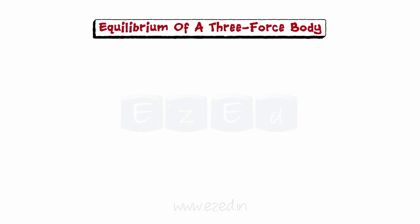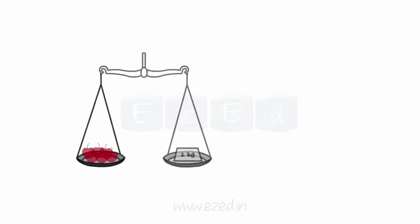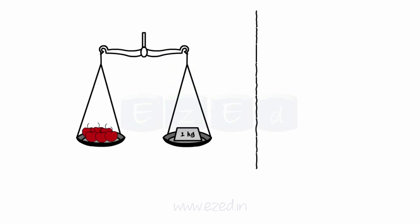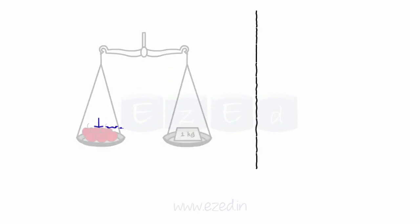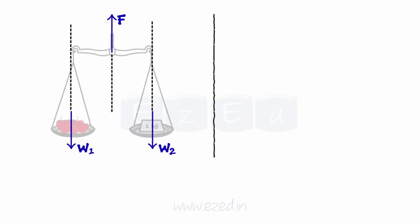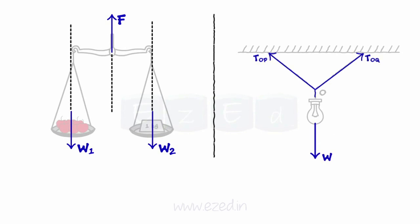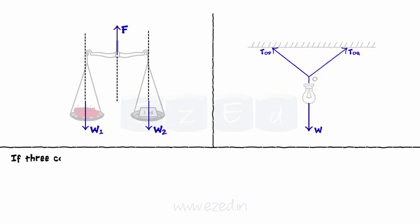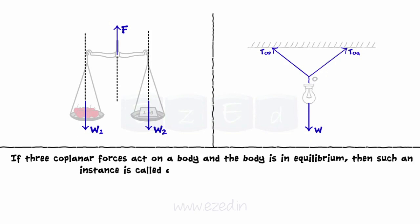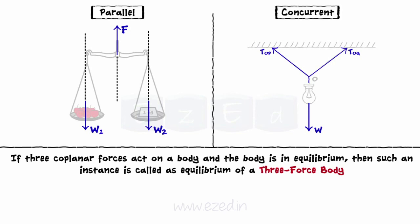Now we will learn about equilibrium of a three-force body. Consider a fruit vendor holding a weighing scale weighing apples. The forces acting in this system are the weight forces and the force applied by the vendor to hold the scale. If three coplanar forces act on a body and the body is in equilibrium, then such an instance is called equilibrium of a three-force body. The three forces would either be parallel or concurrent if the body is in equilibrium.